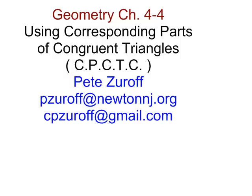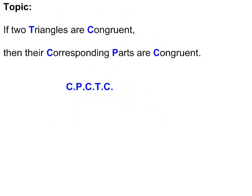In this chapter 4-4, we're going to be using corresponding parts of congruent triangles. If two triangles are congruent, then their corresponding parts are congruent, which we're going to call CPCTC — Corresponding Parts of Congruent Triangles are Congruent.